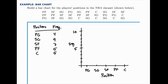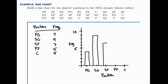Now we're ready to draw a bar for each position. Rather than having the bars connect like they would with a histogram, with a bar chart we draw the bars with some separation, since these are separate categories that don't flow into one another. At point guard we draw a bar up to four, shooting guard up to nine, small forwards at seven, and power forwards and centers each at five. The height of each bar represents the frequency of that category.